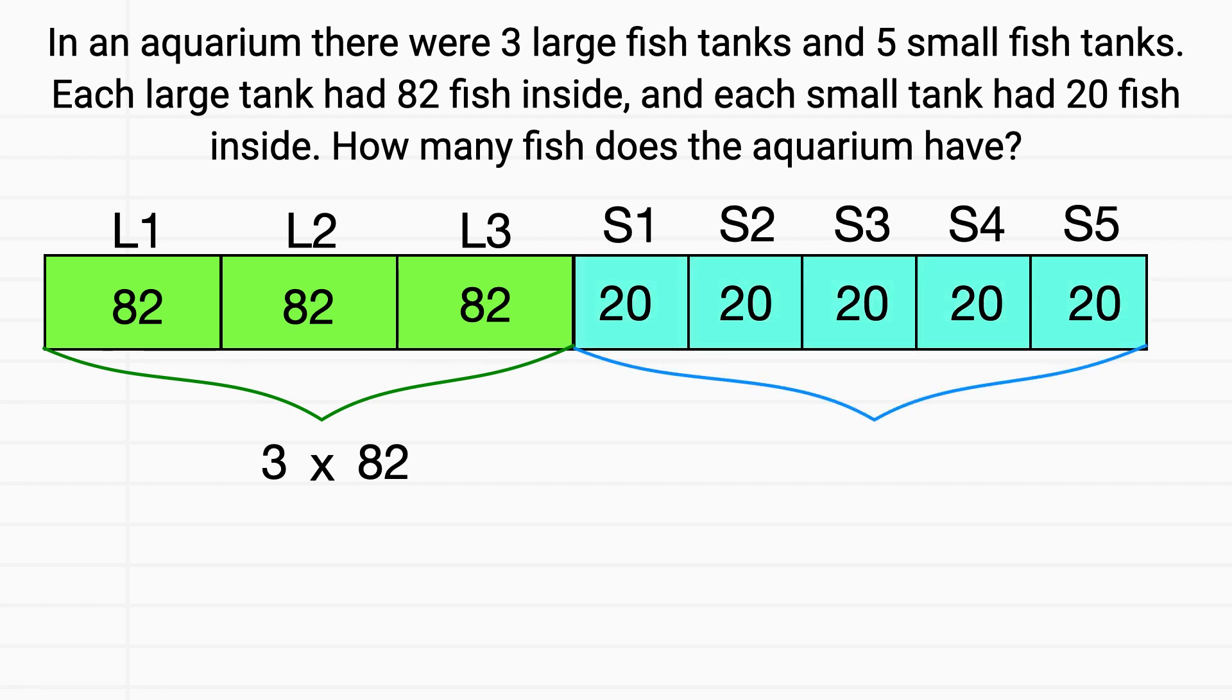What math expression could I solve to find the number of fish in the small tanks? I have 5 tanks, and each tank has 20 fish in it. So I could multiply 5 times 20.